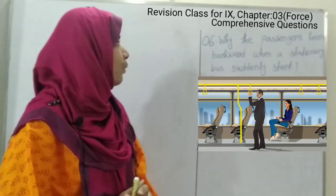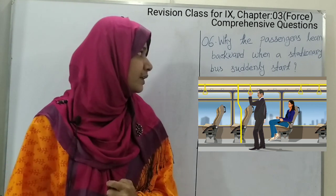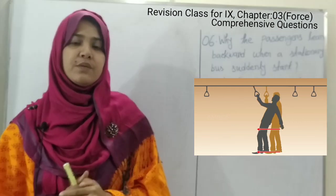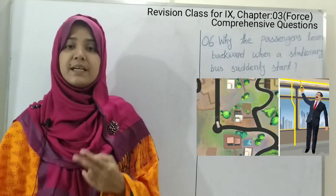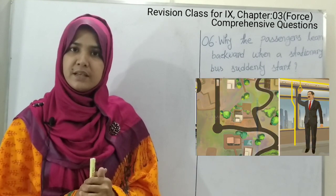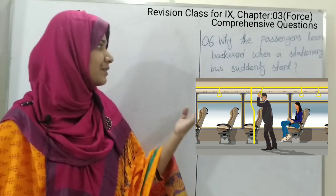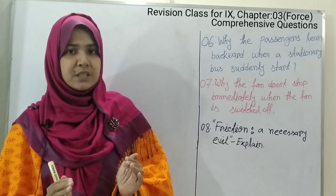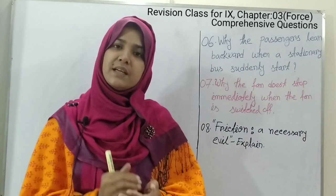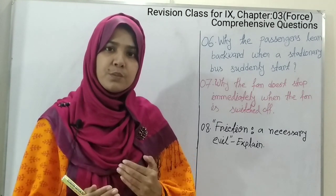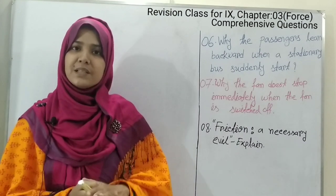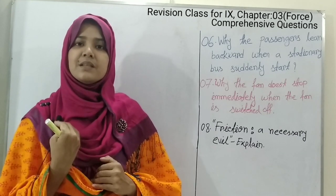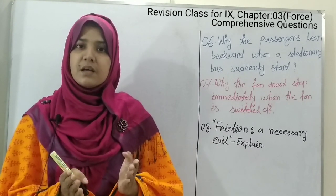Question number 6: why do passengers lean backward when a stationary bus suddenly starts? This happens because of inertia. Every object wants to maintain its own state, which is known as inertia. There are two types: inertia of rest and inertia of motion. When passengers lean backward, this is due to inertia of rest. When the bus is at rest, the passengers are also at rest. When the bus starts moving, the lower part of the passengers moves with the bus, but the upper part remains stationary — so the upper body leans backward.